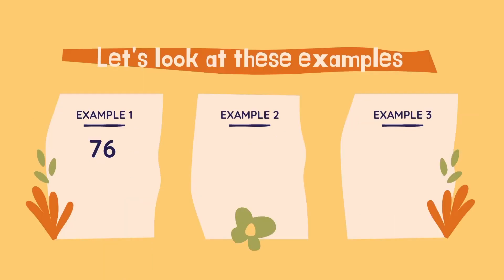Let's expand out these numbers into the value of each of their digits. Our first example is 76. What would 76 look like in expanded form? Well, the 7 is in the tens place so it would be worth 70, and the 6 is in the ones place so it would be worth 6. So 70 plus 6. Example 2: 576. What would that look like in expanded form?